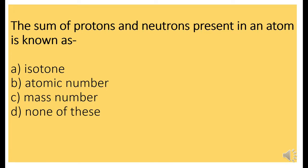Next question. The sum of protons and neutrons present in an atom is known as Option C, Mass Number.